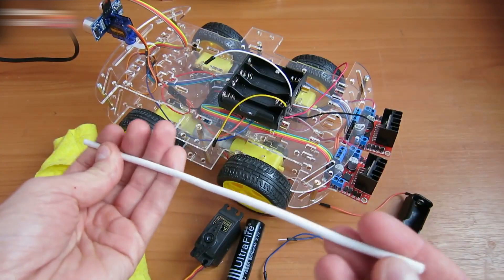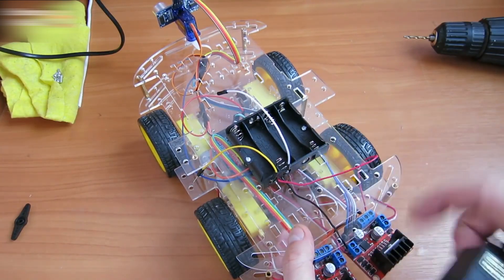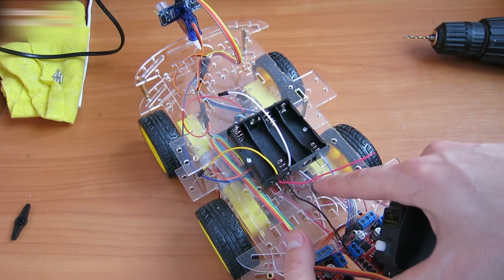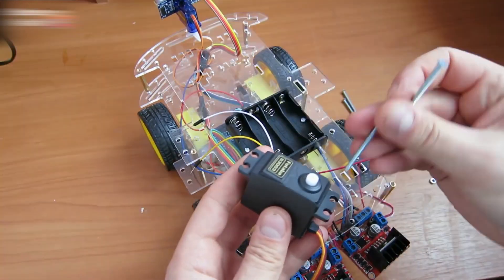You also need a piece of aluminum wire and a rag. Drill holes in the car for the servo. There are two holes here already. Make two more a bit further. Fasten the servo.